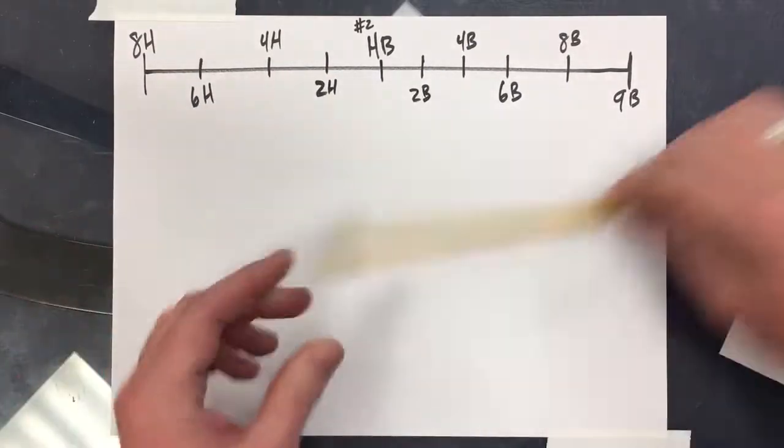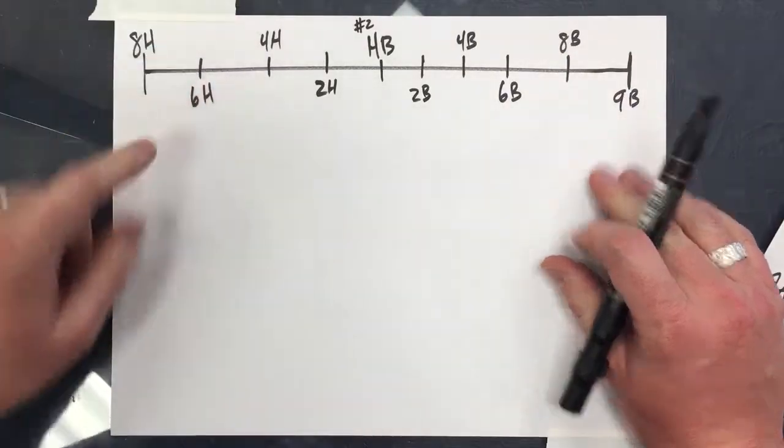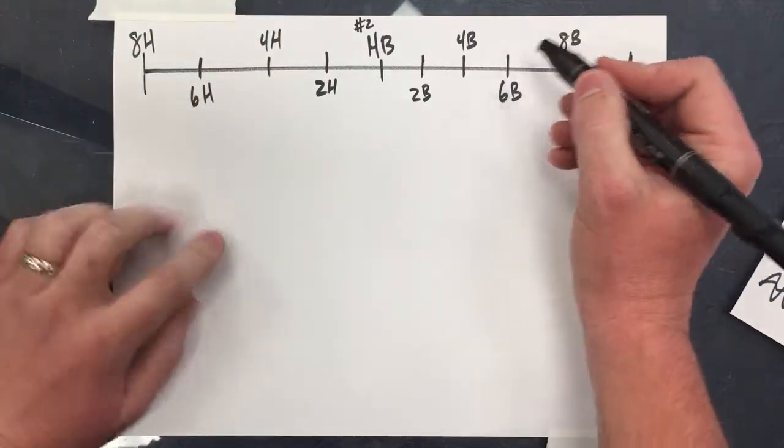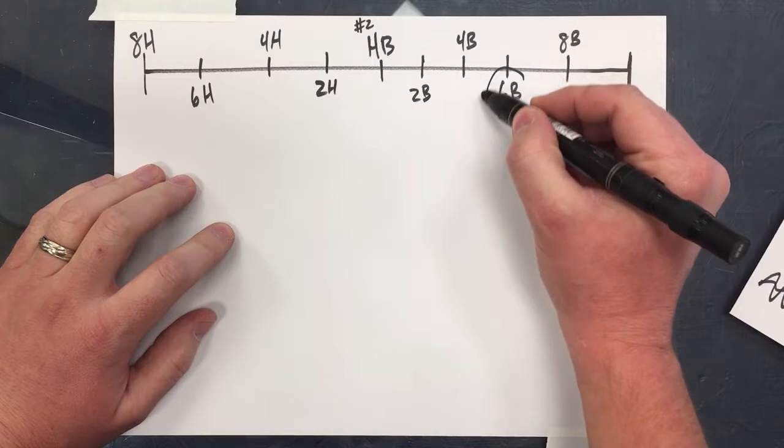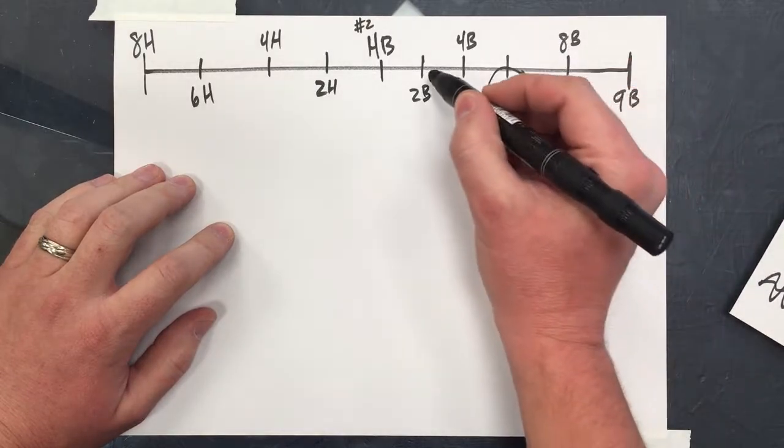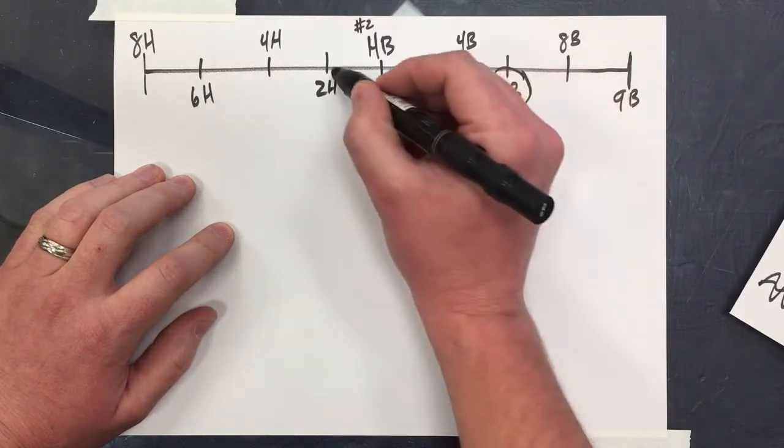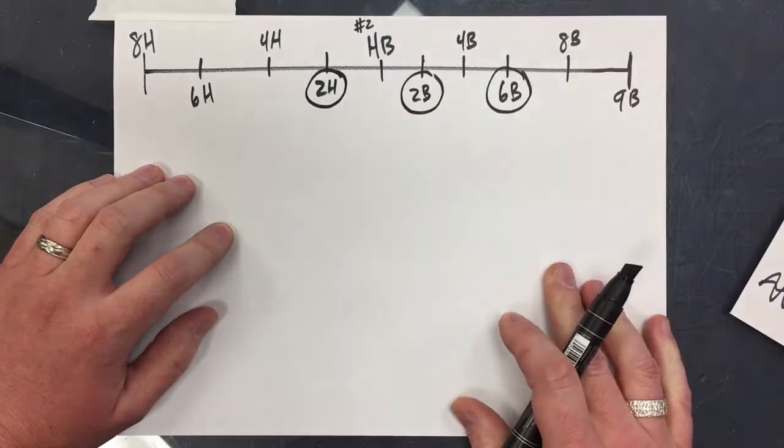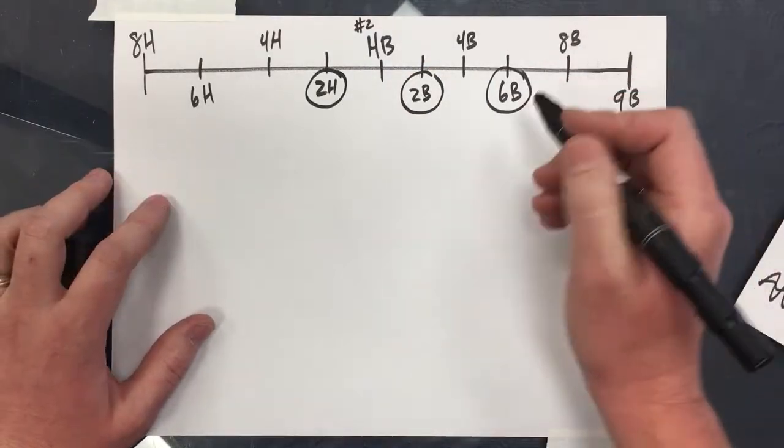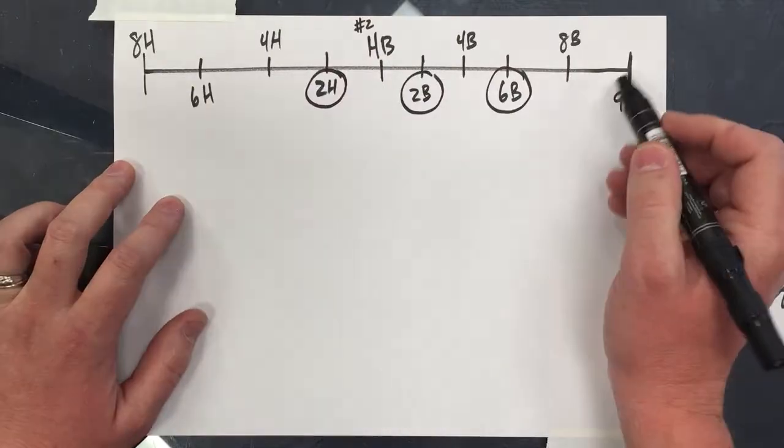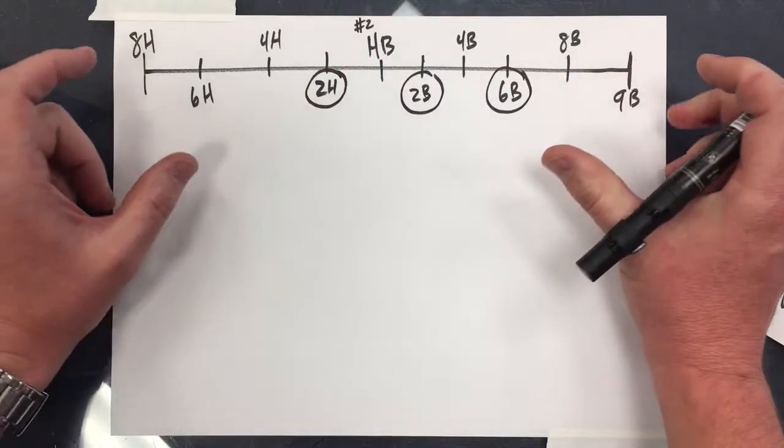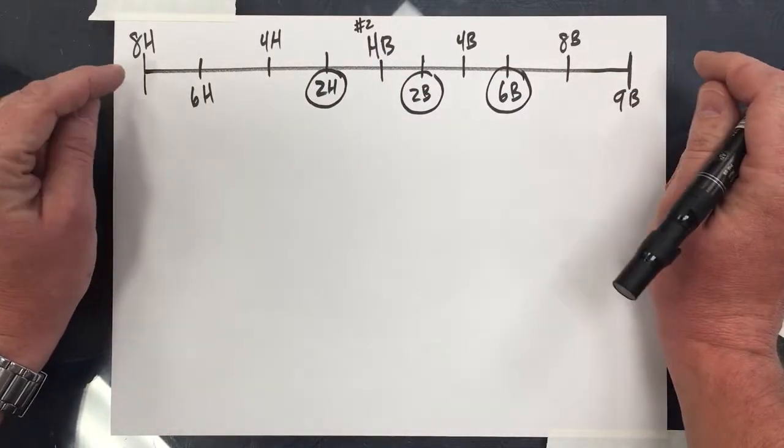What you've been given in class, you've been given a 6B, a 2B, and a 2H. Now some of these others, they're more the extremes of what pencils will do and what they're made of.